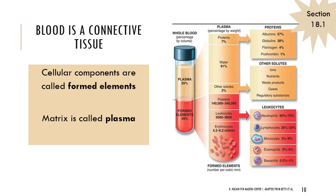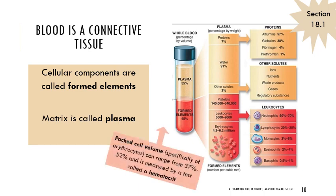Right now we're focusing primarily on erythrocytes, leukocytes, and thrombocytes. One important measurement of formed elements is the packed cell volume — what percent of the formed elements are specifically erythrocytes, those red blood cells — which usually ranges from 37 to 52 percent. That's measured by a test called a hematocrit, and knowing that hematocrit test definition is important.